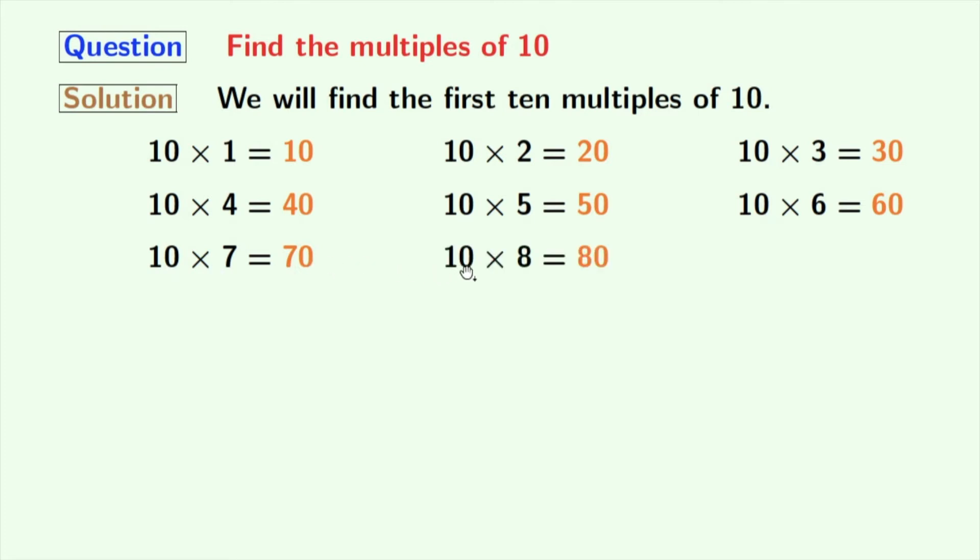Multiplication of 10 and 8 gives us 80. Multiplying 10 with 9 we get 90. If we multiply 10 and 10 we get 100.